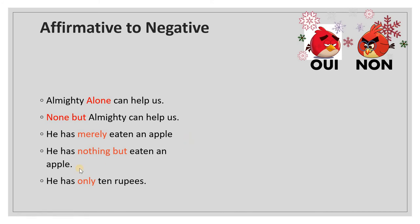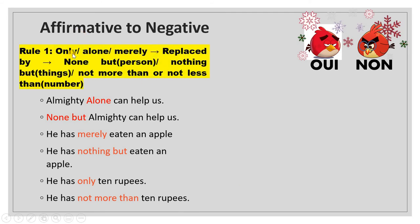'He has only 10 rupees' is affirmative, and transforms to 'He has not more than 10 rupees.' The rule is: when we use the words alone, only, or merely, while changing from affirmative to negative, they can be replaced by 'none but' when referring to a living person, 'nothing but' when referring to things, and 'not more than' or 'not less than' when referring to numbers.